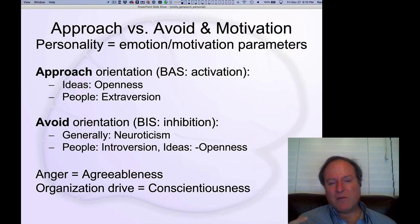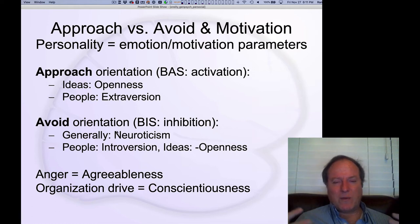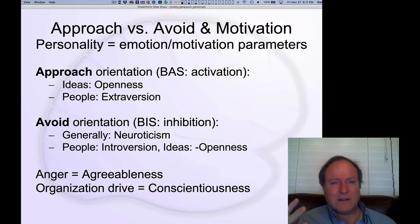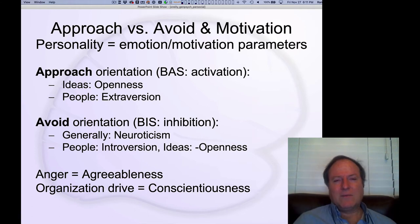The approach versus avoid dimension has been associated very strongly with core animal brain system level organization. This is also known as the behavioral activation system in the approach system and the behavioral inhibition system in the avoid dimension. If you have an overall bias or predilection towards approach versus avoidance behavior, that may be a way of understanding different aspects of personality dimensions, and how that plays out in social versus intellectual factors may explain whether it shows up in extroversion versus openness.